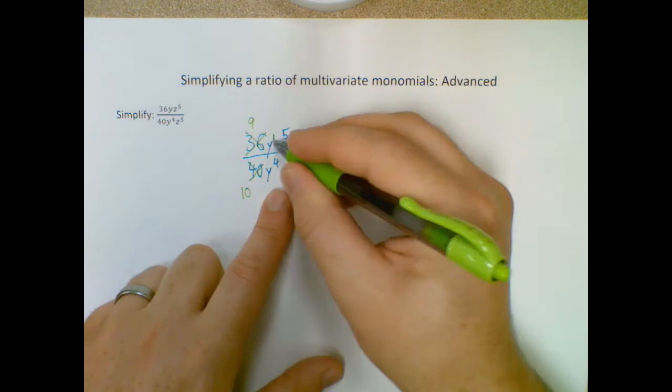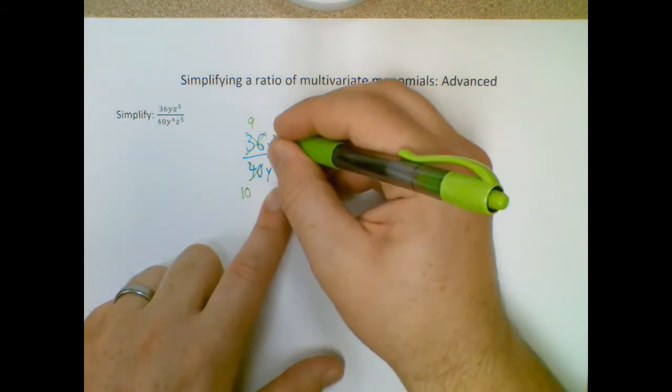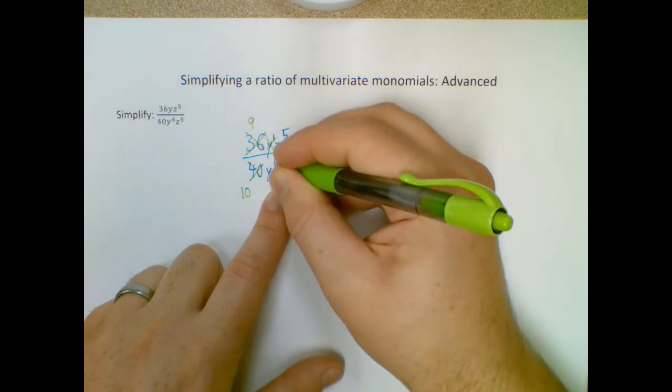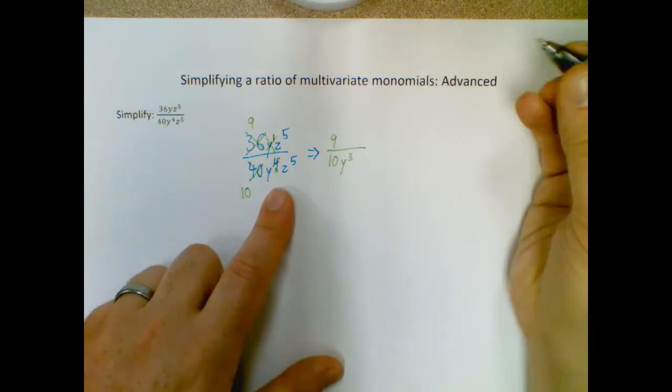Here I have 1y, right, y to the 1st, and this is y to the 4th, so I can cross off this one, and I lose 1 here, so I have 3 left. So there's no y's on top, but there's 3 left on the bottom.